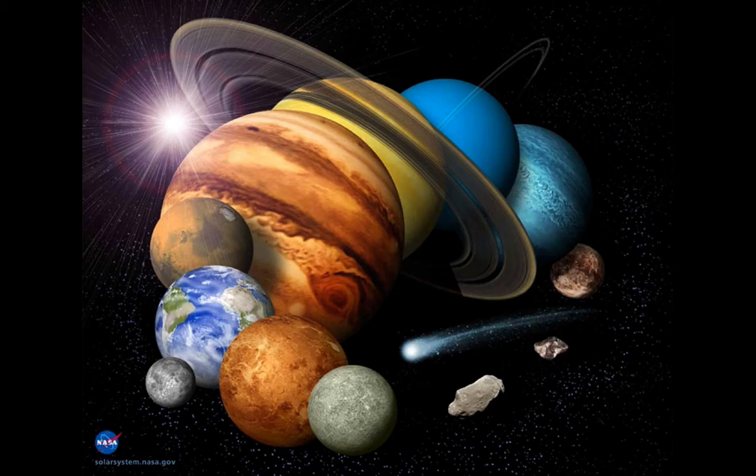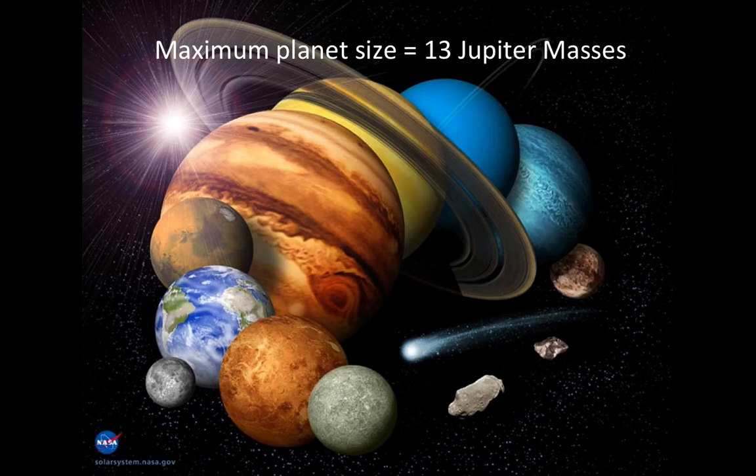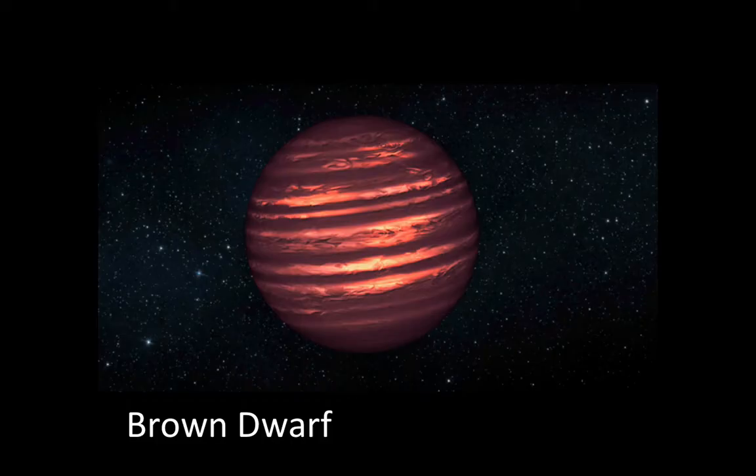Objects at the low end of the mass scale, with masses near the threshold between 13 and about 75 Jupiter masses, are not able to sustain fusion for longer than this. And once it stops, these objects simply cool for the remainder of their days. They're not quite planets, but not quite stars either. And for this reason, they're called brown dwarves. One might think of them as failed stars.